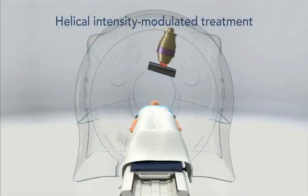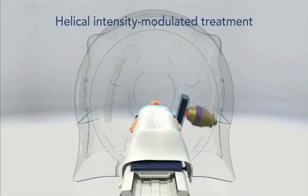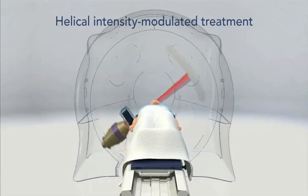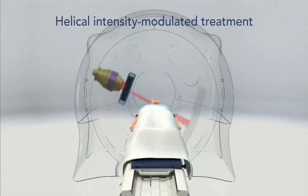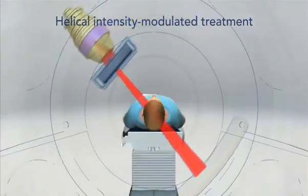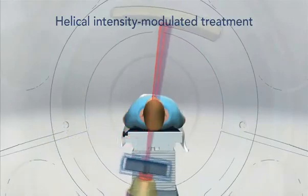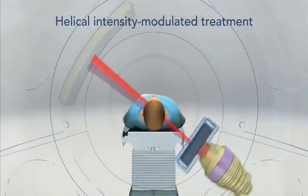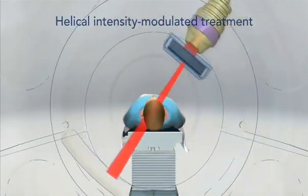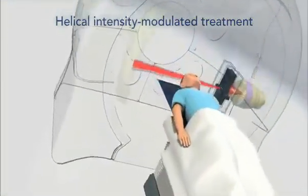For treatment delivery, the same helical rotations of the X-ray beam source are used. This time, however, the intensity of the beam is changed rapidly during each rotation, according to the shape of the tumor, using thin tungsten leaves that block or unblock the beam. The 64 leaves in our unique binary multileaf collimator create tens of thousands of optimized 6-millimeter-wide beam elements known as beamlets.